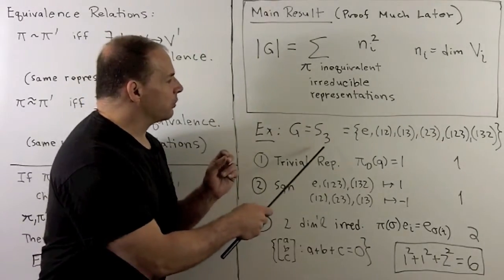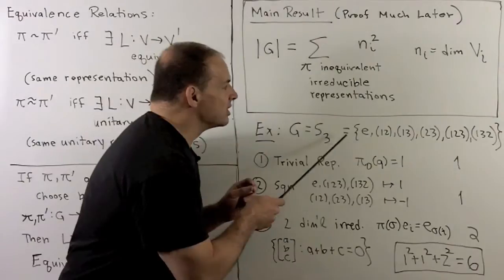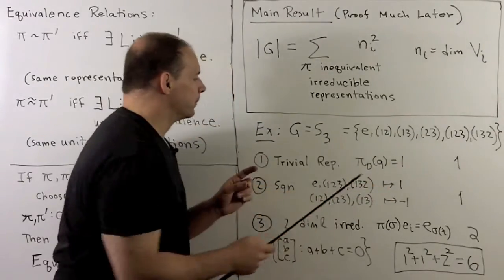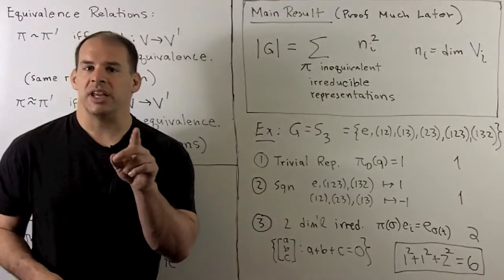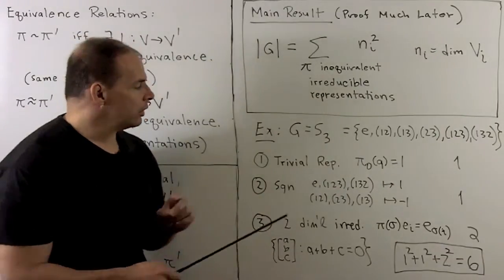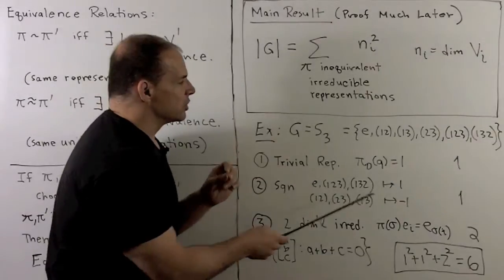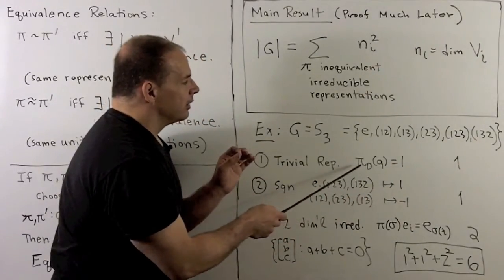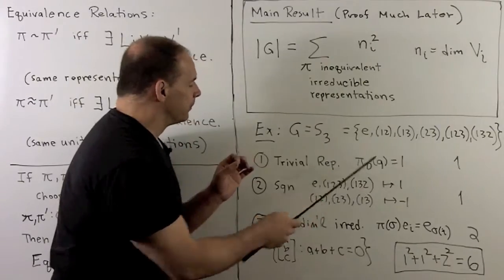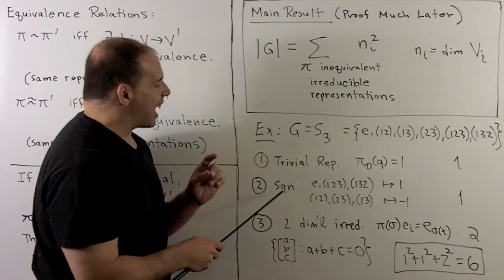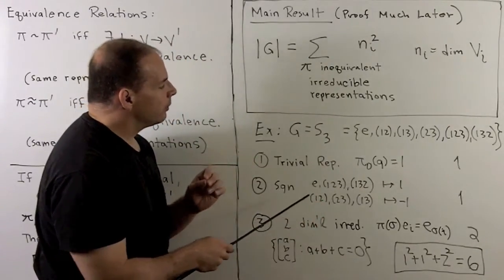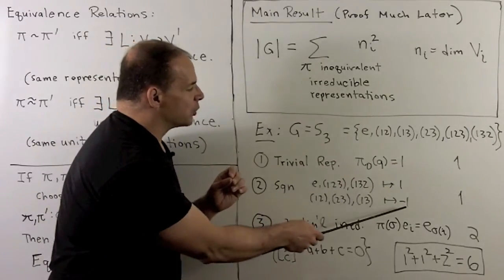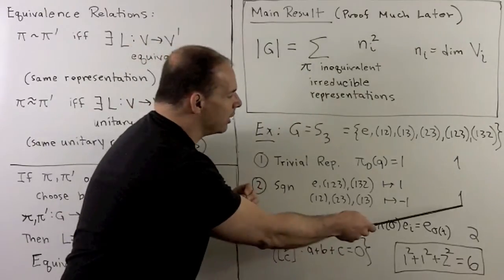First, let's consider the symmetric group S3 on three letters. This has six elements; we use cycle notation. We've seen these before. First, we have the trivial representation — this is one-dimensional, and we always act as the trivial action. Then we have the sign representation: the three-cycles and the identity go to one, and the two-cycles go to minus one. This is again one-dimensional.